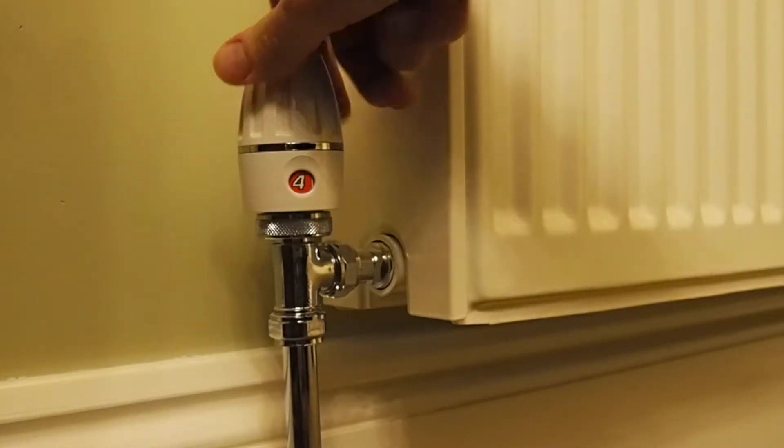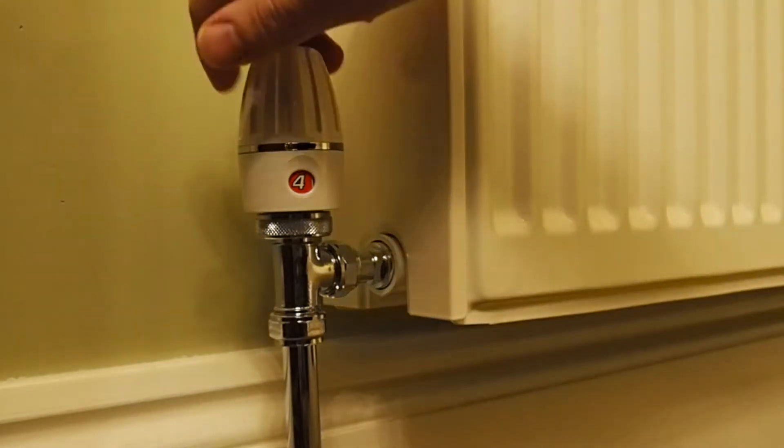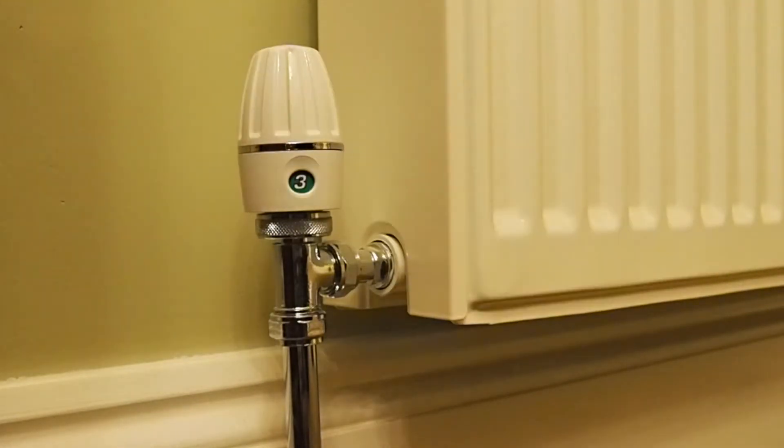When this is set in the middle, for example 3, which might be the equivalent of 20 degrees, the radiator will be hot until the room reaches the temperature set by the TRV, then the water flow will be restricted, and the radiator will begin to cool down. This helps to maintain the temperature for your room.